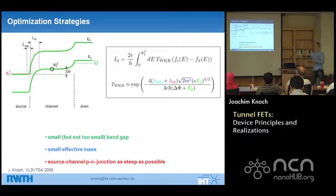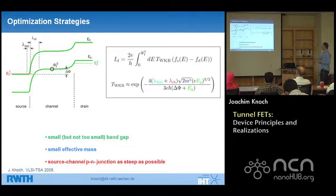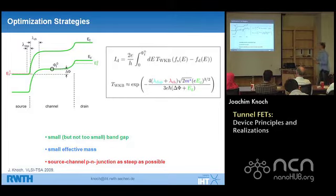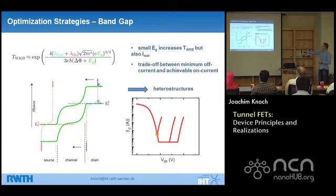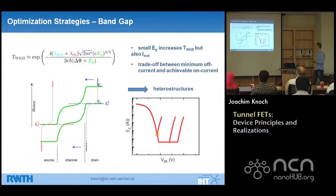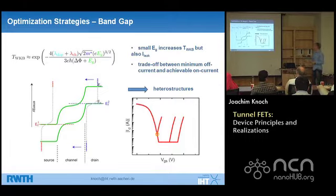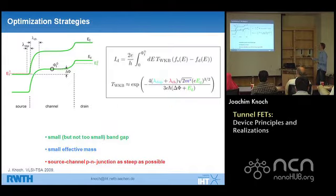Going back to the WKB approximation to see what optimizations can improve tunneling probability. The first knob is the band gap: a smaller band gap increases tunneling probability. However, you cannot make it too small — if the band gap is too small, you get leakage and the current level goes up, restricting you to extremely small VDS due to ambipolar behavior. A heterostructure would be ideal: large band gap in the source and throughout the device, with only a small band gap at the tunneling interface to keep leakage small.